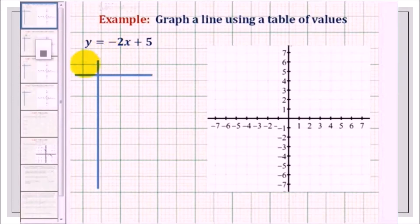We will graph the following line using a table of values. Let the first column on our table represent x values and the second column represent y values. What we are going to do is to substitute the x value into the equation and solve for the corresponding y.